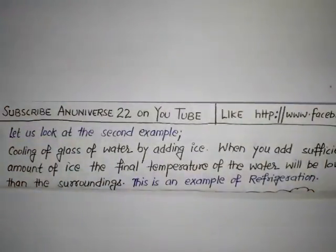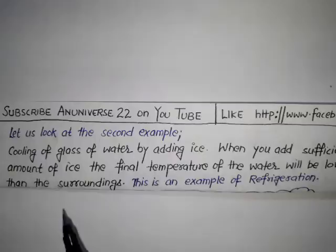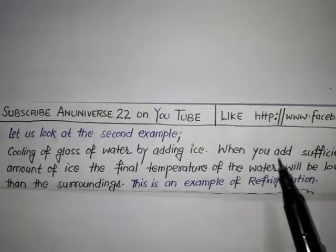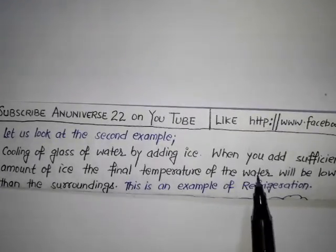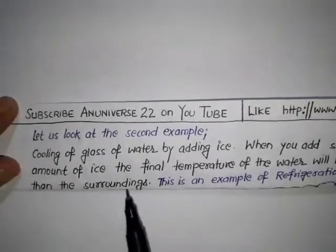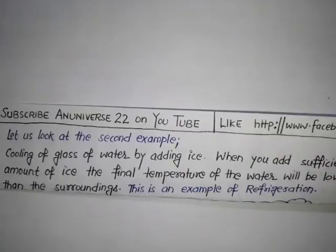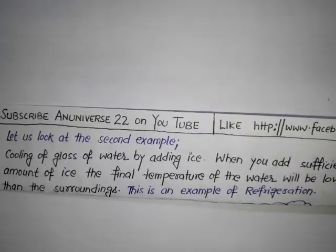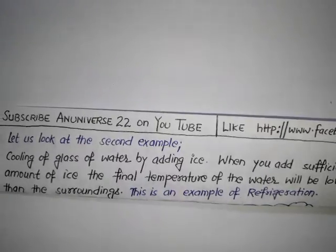Example of refrigeration: cooling of a glass of water by adding ice. When you add a sufficient amount of ice, the final temperature of the water will be lower than the surrounding temperature. So this is an example of refrigeration. In this video we have learnt about the difference between cooling and refrigeration. Thanks for watching, have a nice day.